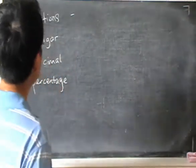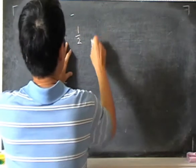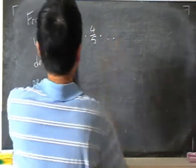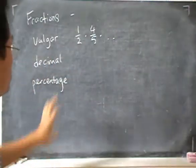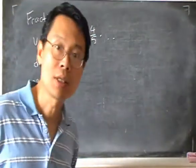Rather it means things like 1 over 2, 4 over 5, and so on. It means fractions that are written in this way, as a number over a number.